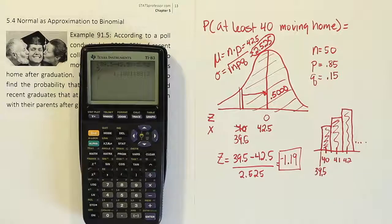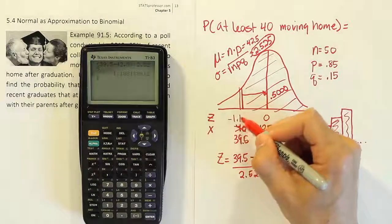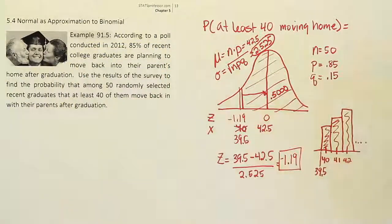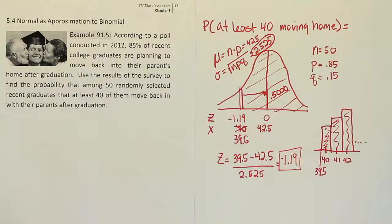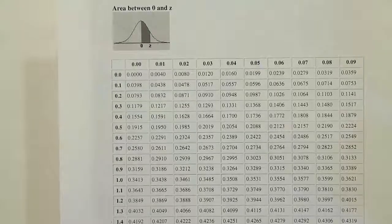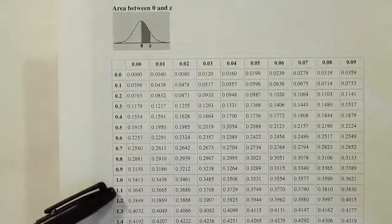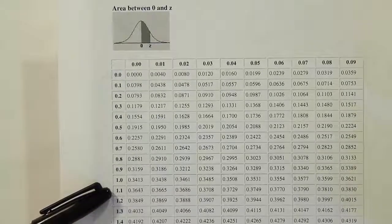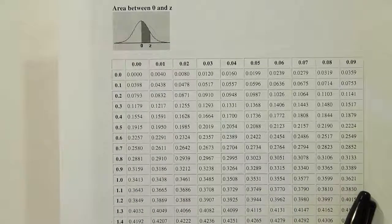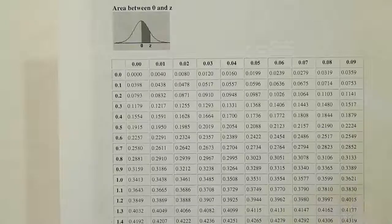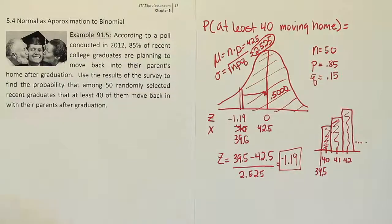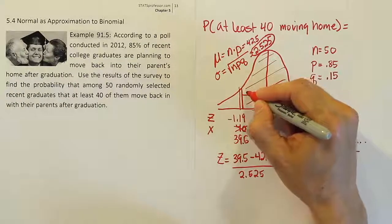That's our z-score. We're going to take that z-score, put it here, negative 1.19. And now all that's left to do is to go to the table, get this area, and we'll basically be finished with the problem. So let's go to our z-score chart and find that area. In this problem we're looking at negative 1.19. Let's find the 1.1 row, and we'll go all the way to the last entry in that row because that's where the 9th position is, and we find out the answer to be 0.3830.